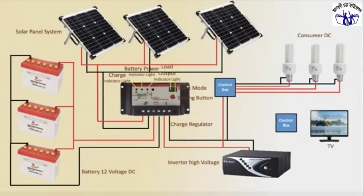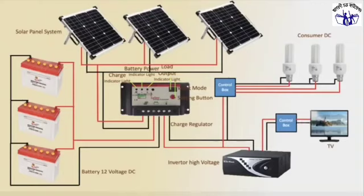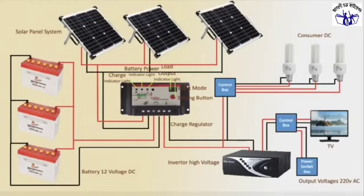The control box also manages inverter 220-volt outgoing, with positive and negative connections going to the television. The control box turns the TV on and off, and connects to the fuse box. Voltage output is 220-volt AC — the full solar system is complete.